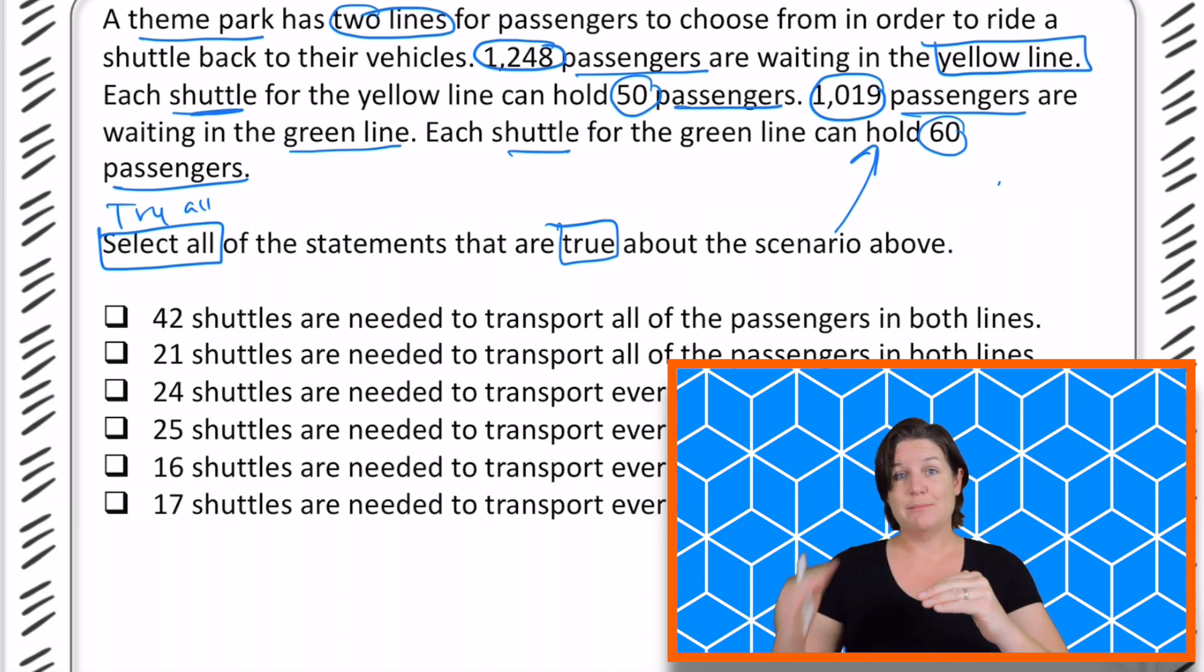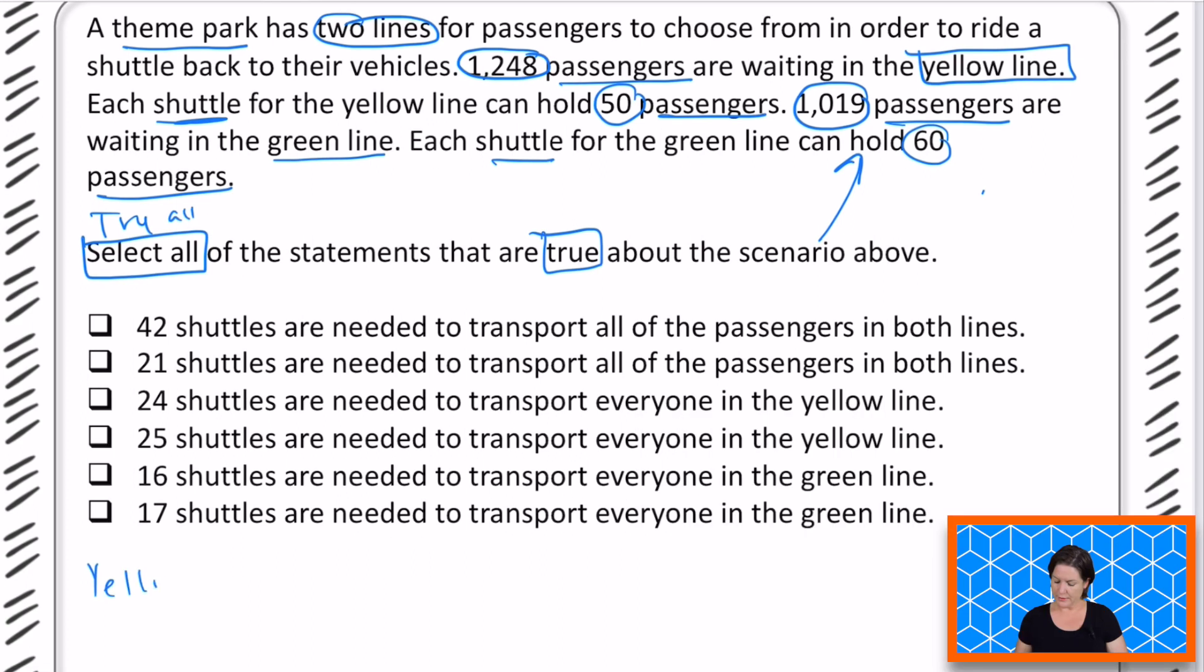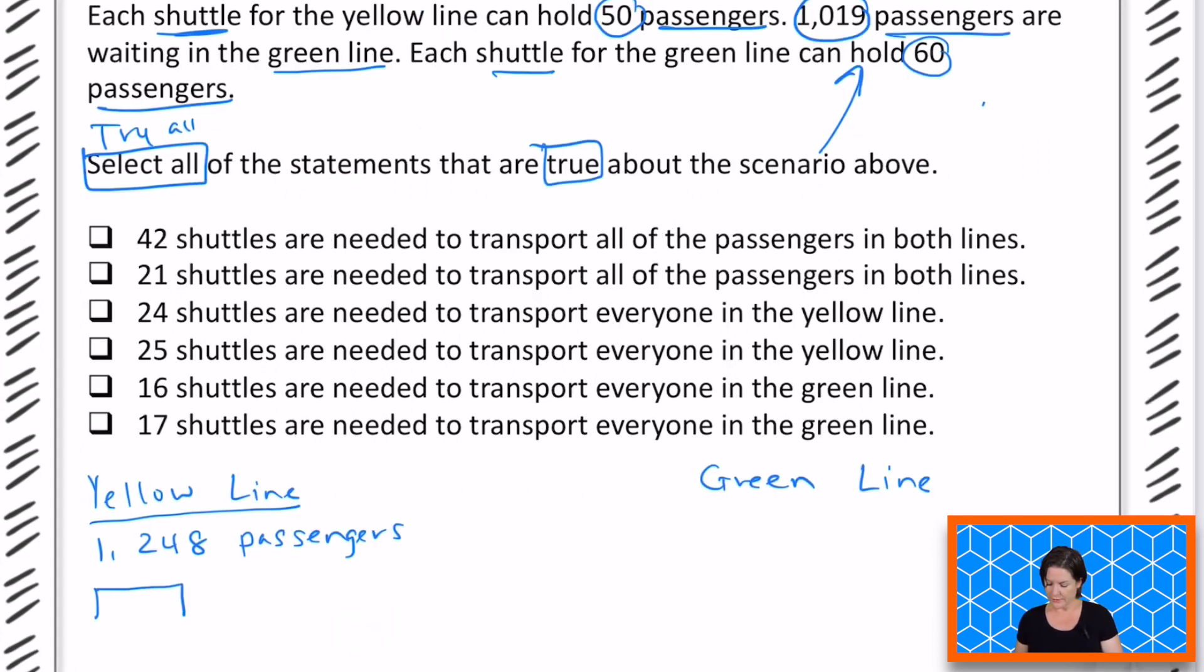What I'm going to do next is take it line by line, sentence by sentence and do a quick drawing so my brain can make sense of it. All right, so it says a theme park has two lines to choose from. We've got the yellow line and the green line so passengers can choose. I got that part, but let me go back. 1,248 passengers are waiting in the yellow line. So I'm just going to write right here, 1,248 passengers. Each shuttle for the yellow line, let me draw here a little shuttle. That is an amazing shuttle, I'm just saying. So each shuttle for the yellow line can hold 50 passengers. I'm just going to put 50 passengers right there. So we have a lot of passengers and we can fit 50 on the yellow shuttle at a time.